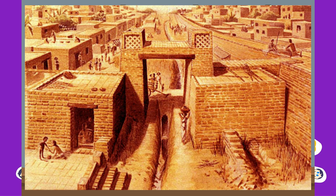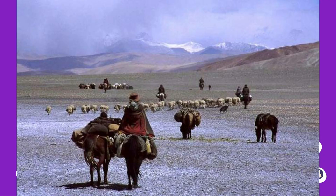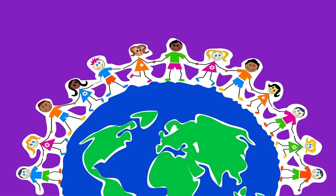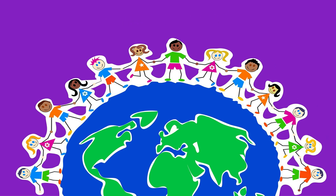With the decline of the Harappan culture around 1900 BC, a second urbanization took place. A new group of nomadic tribes came to the Indian subcontinent from the northwest and settled near Saptasindu. Their sacred religious book, the Vedas, records them as the Aryans, meaning noble ones. This period of Indian history is therefore known as the Vedic period.